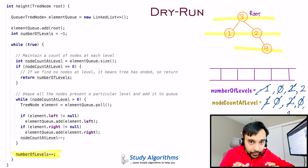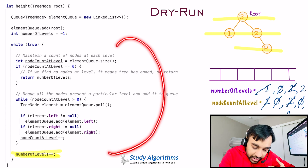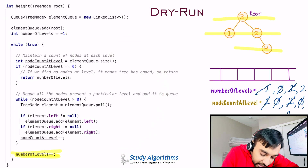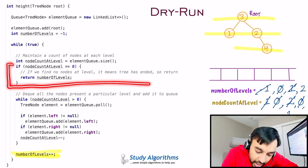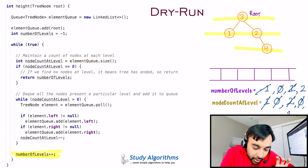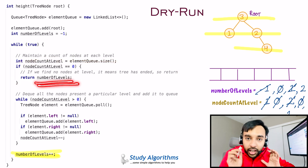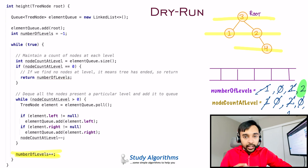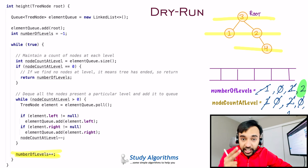Now when the while loop runs again, there are no elements in the queue. This is the time when the if condition gets executed — you don't have any new nodes, and hence you simply return the number of levels. This returns your answer, which is 2. So the height of this binary tree is 2.